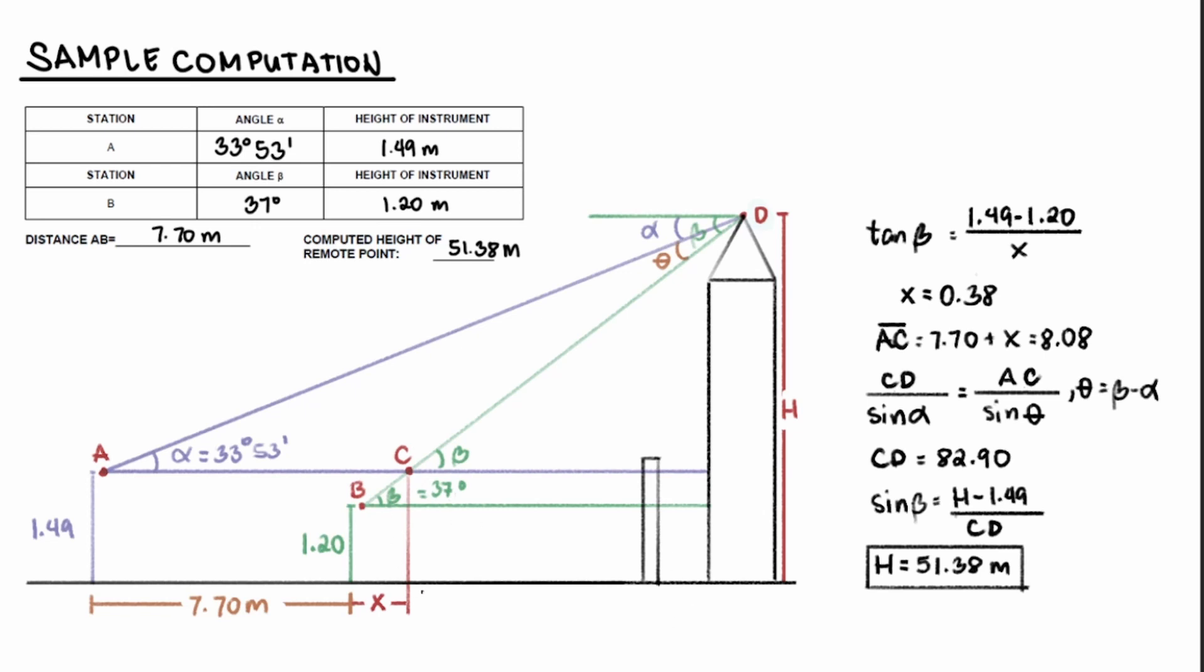Due to the theorem for alternating interior angles, if this is beta, then this is also beta. And if this is alpha, this is also alpha. And if we subtract alpha from beta, we get theta.